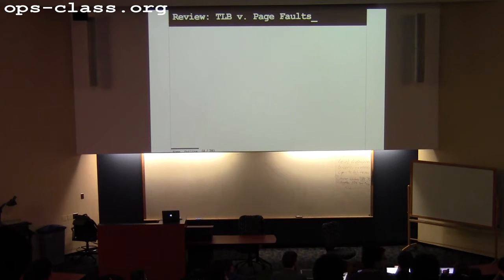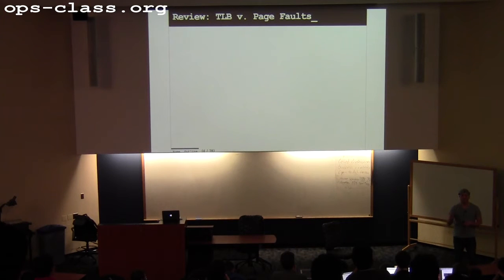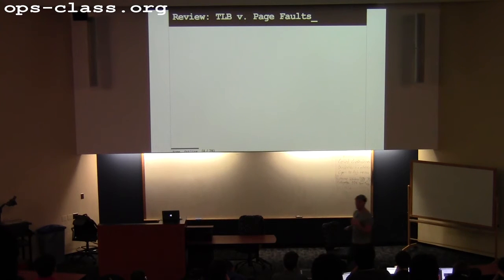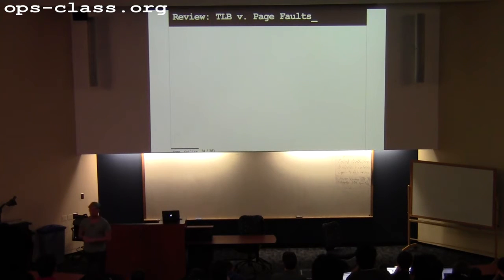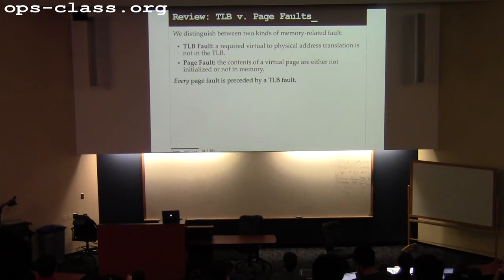What is a page fault then? If the page is not in memory — remember, all the TLB tells the OS is it doesn't know how to translate this virtual address. In the process of loading the translation, the operating system may discover that this page is no longer resident in memory because it moved it out to the swap file to make more space. Or it may discover that the page is not initialized — it's a heap page, an address the process has permission to use but has never accessed before. In that case, just create something with zeros and let the translation continue. Every page fault is preceded by a TLB fault.